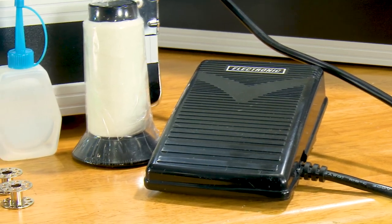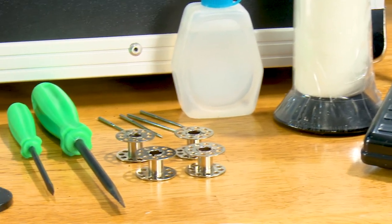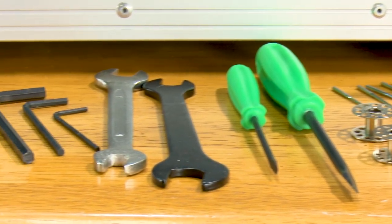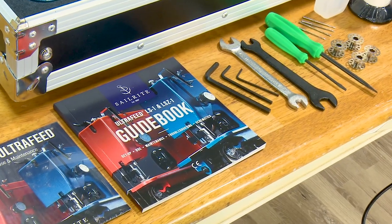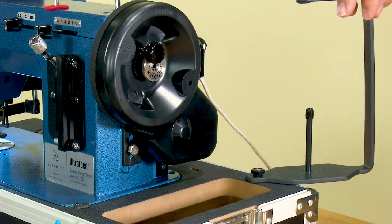The Plus Package also includes our electronic variable speed foot controller, thread, four bobbins and needles, oil, tools, and our fantastic comprehensive guidebook.